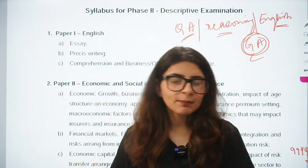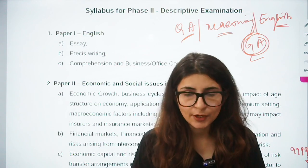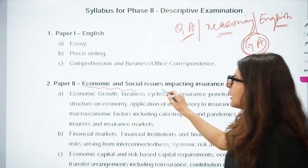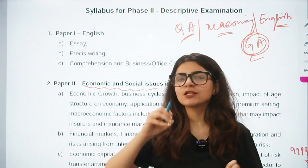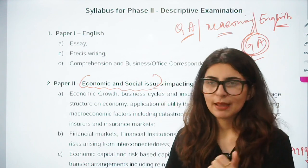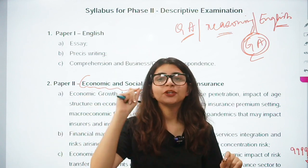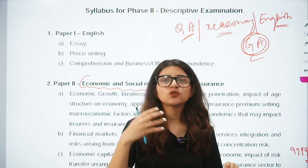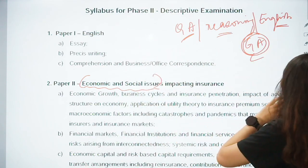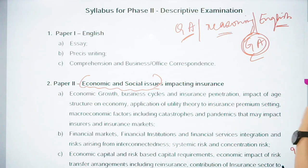Phase 2 syllabus can be a little technical, so we have to decode it — discussing which topics are extra and which are overlapping. In Phase 2, there are three papers: Paper 1, Paper 2, and Paper 3. As per the notification, questions will be displayed on screen and you have to write answers on sheets. Phase 2 is descriptive, not objective.